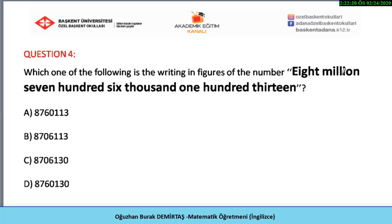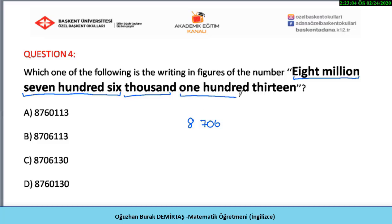Question four: which one of the following is the writing in figures of the number eight million, seven hundred six thousand, one hundred thirteen? Let's look at each part. First, we have eight in the millions part: eight million. Then seven hundred six in the thousands part. Lastly, in the ones spot we have one hundred thirteen. So the number is 8,706,113 and the correct answer is B.